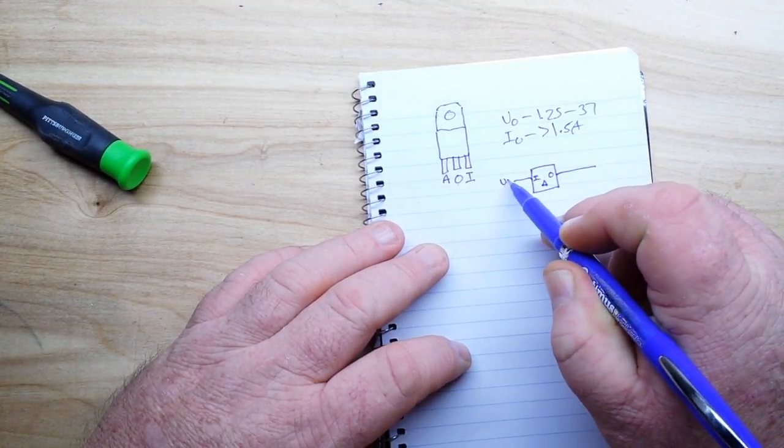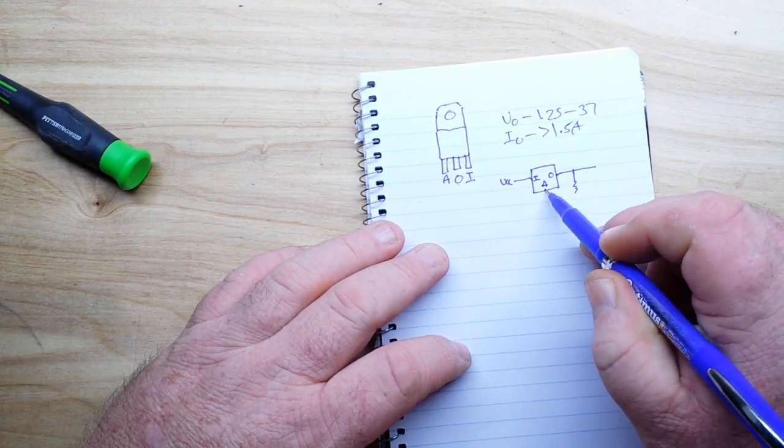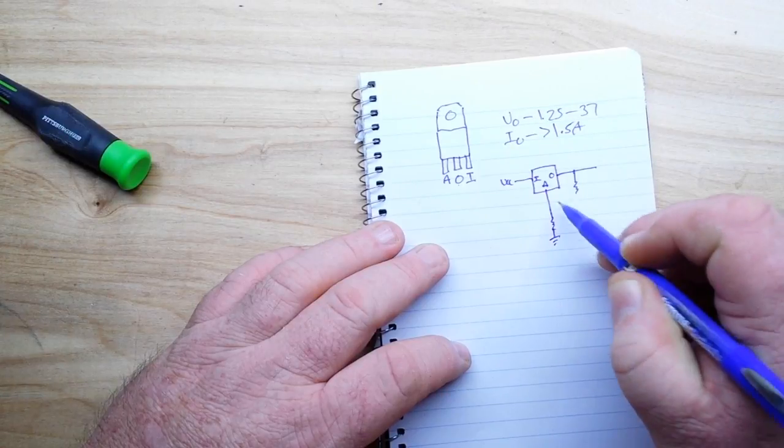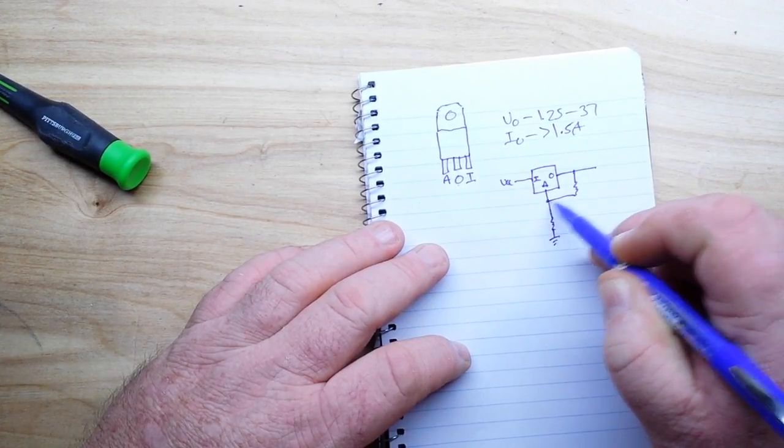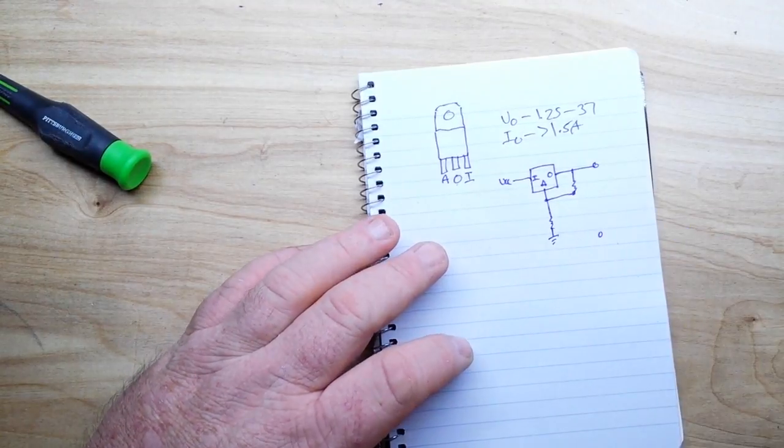Our in goes to VCC, our output comes off with a resistor here, we have a resistor here that goes to ground to create a little voltage divider, and we read our voltage here. That's where we get our adjustment voltage from.